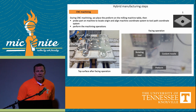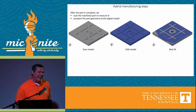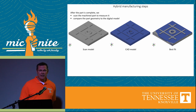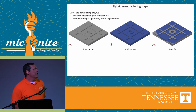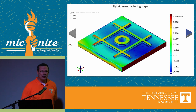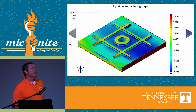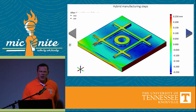We have a digital model, we have a scan of what we printed, we have the thing that we wanted in the middle, and then we can compare those two to see if we got the right answer or not. This is a superposition — a difference map — between what we wanted and what we got. The scale bar is plus or minus 250 micrometers, which is about plus or minus two hairs.